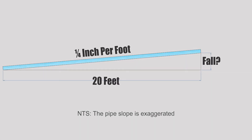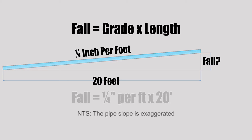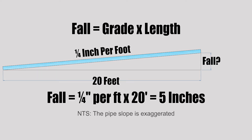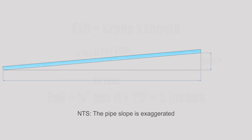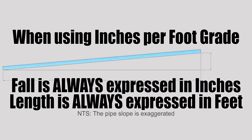For our first example, we have a 20-foot-long pipe graded at quarter inch per foot, and we want to find out how far this pipe will fall vertically. Plugging into the formula — fall equals grade times length — grade is 0.25 inches per foot, length is 20 feet: 0.25 times 20 equals five inches. When using inches-per-foot grade, the fall will always be in inches and the length always in feet — mix those up and you'll get the wrong answer.